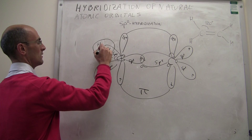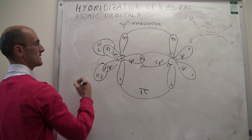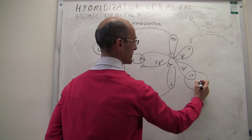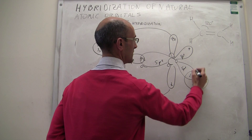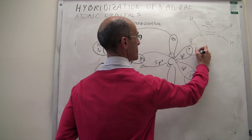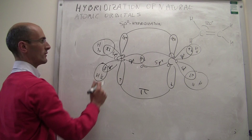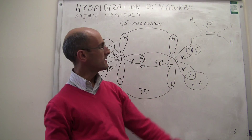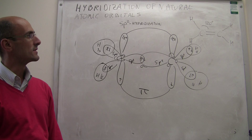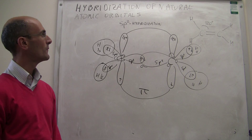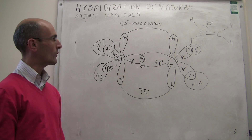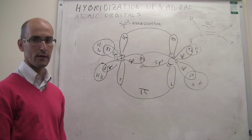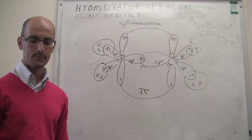That sp2 orbital overlaps with the 1s orbital of hydrogen. Since those sp2 orbitals are 120 degrees from each other, that explains why the bond angles in ethylene are about 120 degrees. That is how we explain sp2 hybridization and how we apply it to the molecule of ethylene.